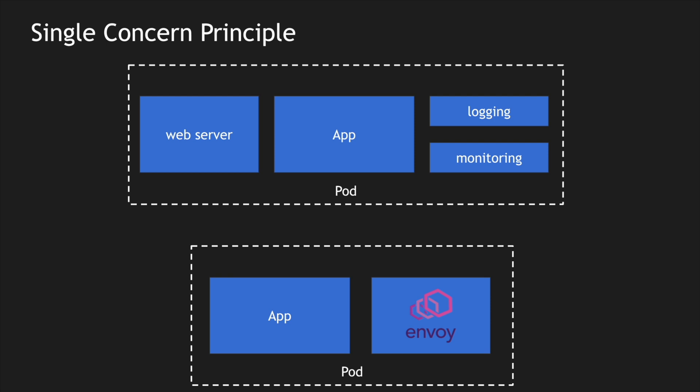Envoy is a data plane which we leverage in the service mesh or environments where you want to unify things for your application without changing the application itself. In this case, all my web proxying, logging, and monitoring is handled by the Envoy proxy. The single concern principle says that if a container has its own single concern, you can easily replace that feature with another container. This is much more scalable compared to my previous implementation because I had separate containers incurring more memory, but now I have a single Envoy container which is much more scalable.